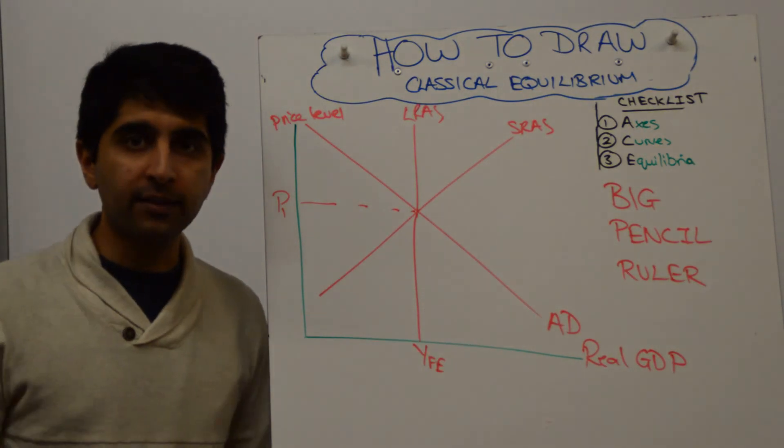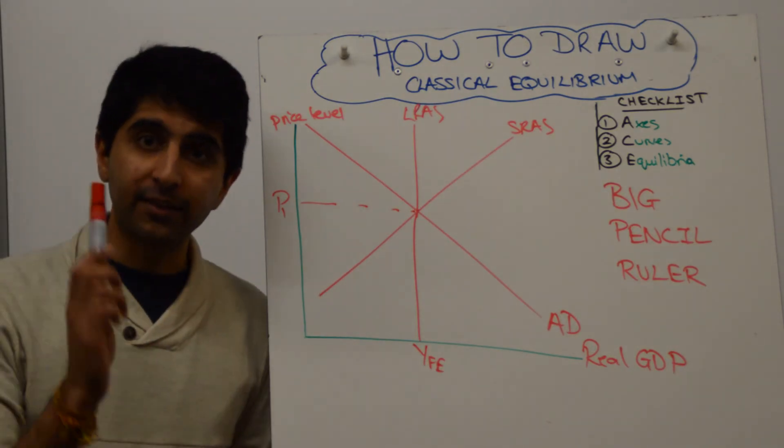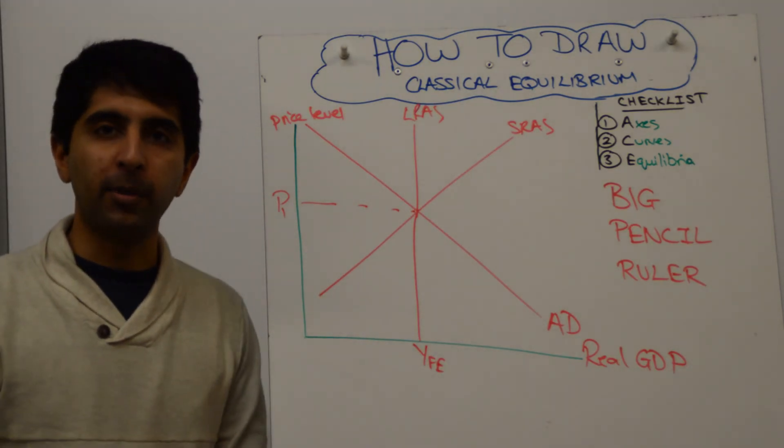Where AD cuts SRAS happens to be also where AD cuts LRAS. Then we are at full employment in the classical model.